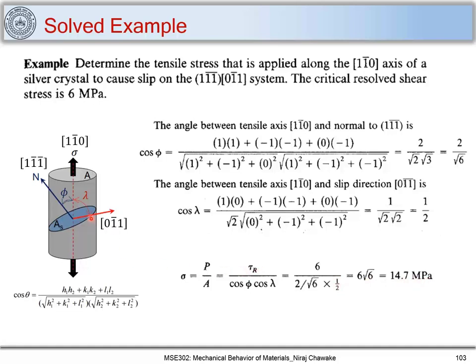So if we know the resolved shear stress needed to cause slip, we can determine the required tensile stress along the tensile axis. Conversely, if we know the applied stress, we can find the tau_RSS acting on any slip plane.